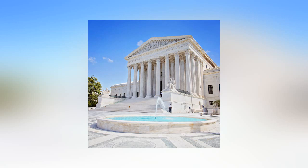Three interlocking statutes establish that CAT orders may be reviewed together with final orders of removal in a court of appeals. The Illegal Immigration Reform and Immigrant Responsibility Act of 1996 authorizes non-citizens to obtain direct review of a final order of removal in a court of appeals, Section 1252(a)(1), and requires that all challenges arising from the removal proceeding be consolidated for review, Section 1252(b)(9).